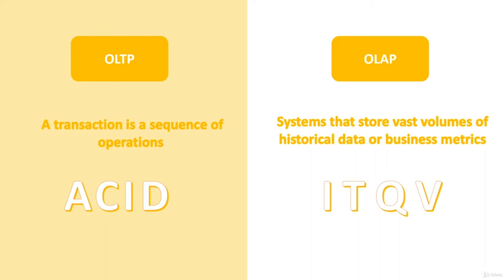Transactions must adhere to the ACID principle. Atomicity guarantees that everything either succeeds or fails as a whole — if one operation fails, all changes are discarded and the data returns to its original state. Consistency ensures the data stays valid during all transactions; nothing can be created or lost without being accounted for. Isolation treats every operation as unique, even when executing concurrently, guaranteeing only consistent states. Durability guarantees that once a transaction is applied, it will stay over time even if the system crashes.